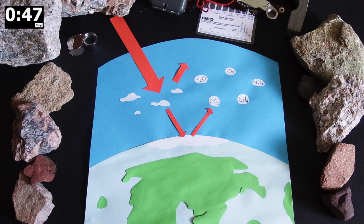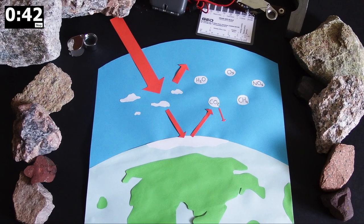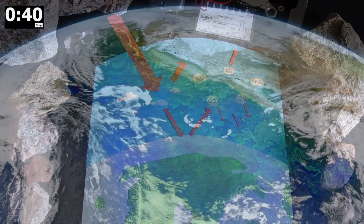Without an atmosphere, all of this would be lost to space, but certain gases such as methane, carbon dioxide and water absorb and re-radiate it back. This is the greenhouse effect.